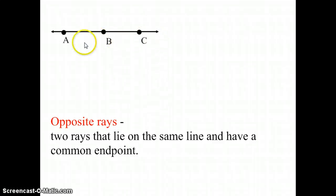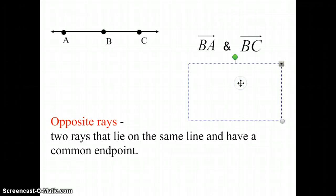So if this is a line, the only way that we can get two rays with common endpoints would be to name it BA and BC because they are going in opposite directions.